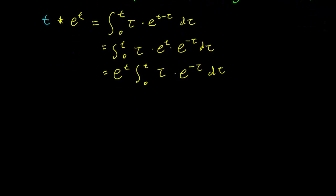This is clearly an integral that requires integration by parts, so let's do that. Let u be tau and let dv be e^(minus tau) d tau. In that case, u equals tau, du equals 1, and dv equals e^(minus tau), so v must be minus e^(minus tau).